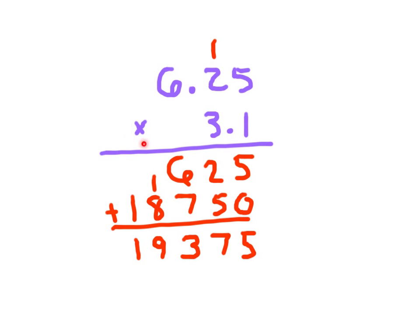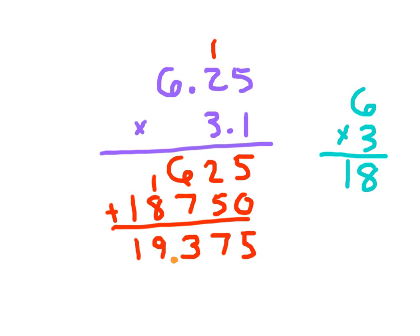Adding those two numbers carefully gives the product. Now I just have to place my decimal point. How many decimal places were in this whole question? Three. So there are three decimal places in the answer — I count 1, 2, and 3 from the right. As a check using estimation: 6 times 3 for those whole numbers is 18, so we have two whole-number digits, confirming the decimal point is in the correct spot. That's a key part of multiplying decimals.